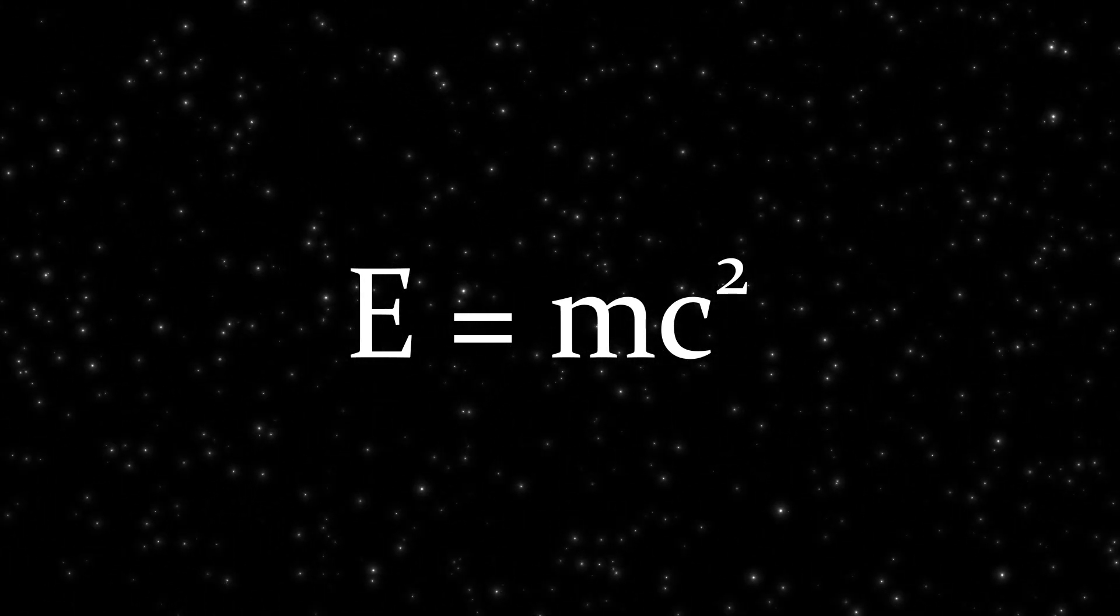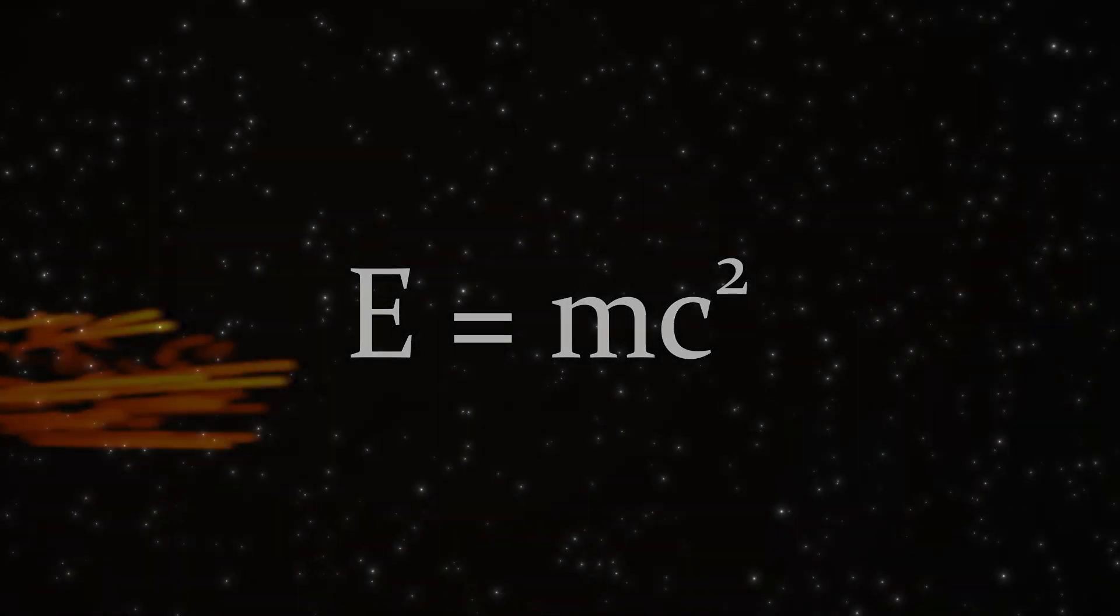Where, then, did the term relativistic mass come from? A term that has migrated from textbook to textbook for decades. Even though specialists who actively use the formulas of the theory of relativity in practice do not use it. This concept arose from an attempt by some physicists to interpret the formulas of the theory of relativity for energy and momentum.